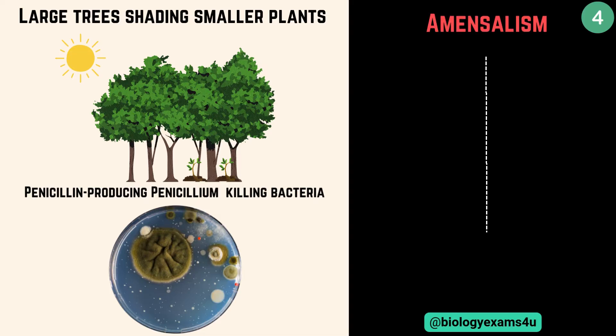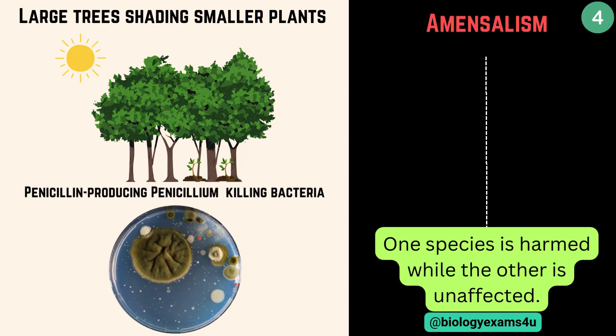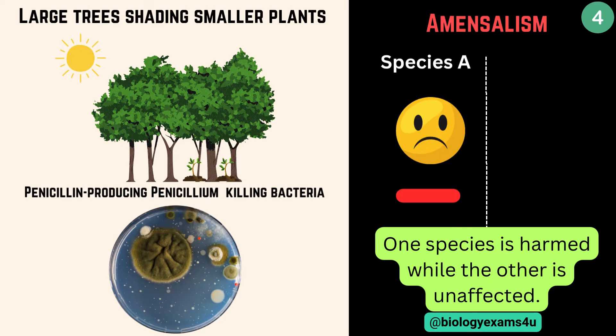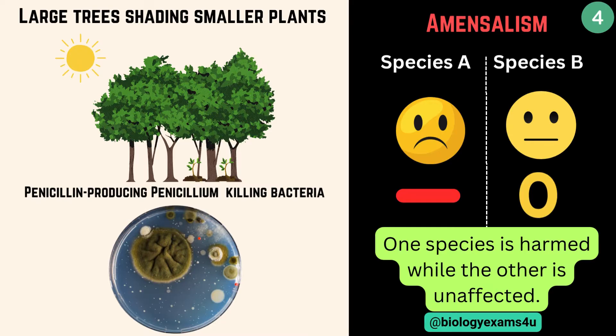This type of interaction is called amensalism. One species is harmed while the other is unaffected. The bacteria is harmed in the case of mold and bacteria, whereas penicillin is unaffected — it secretes chemicals that inhibit the growth of bacteria. So species A is harmed, and species B is unaffected, so let's give zero.